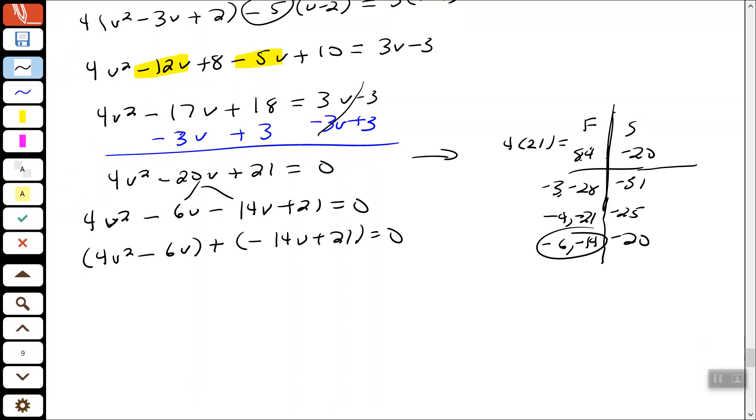Factor the GCF out of each group. So the GCF of 4V squared and 6V is 2V. So divide both of these by 2V gives us 2V plus 3.